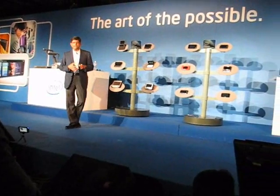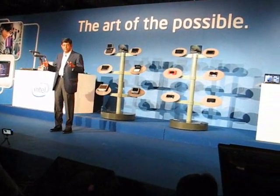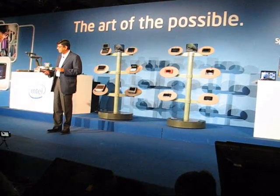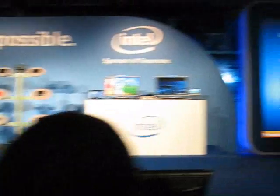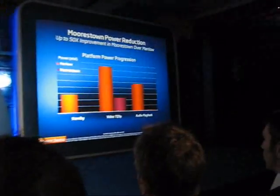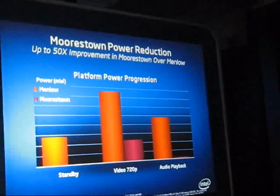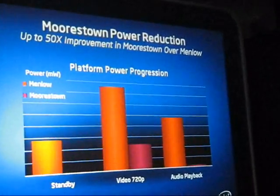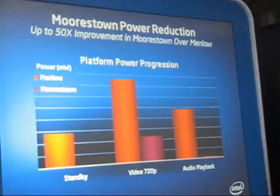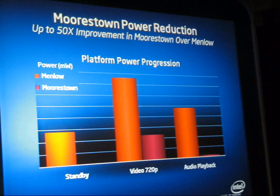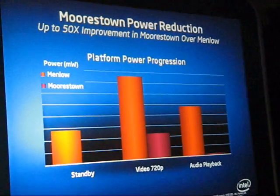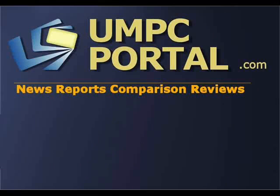Now if we take this data and start to look at it from the standpoint of a graph and plot it, this is what you would expect to see. I'm showing you the standby power on Menlo relative to Morstown, the video playback, the standby power off, and the radar mode.